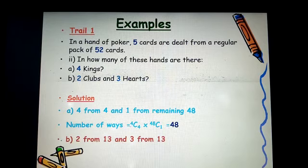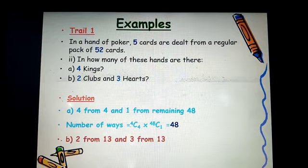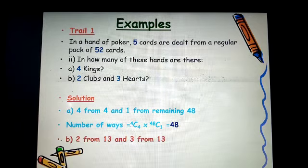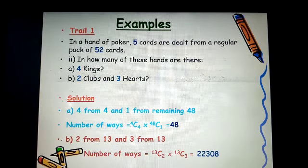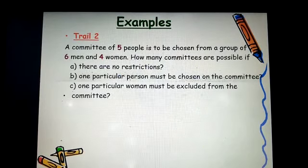Now, in the second instance, that is the B part. How many clubs do we have? We have 13 clubs and 13 hearts. So, 2 clubs means we are selecting 2 from 13. 3 hearts means we are selecting 3 from 13. So, this gives us 13 combination 2 times 13 combination 3. Very simple. Give it a try.